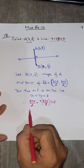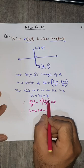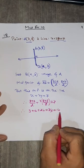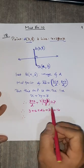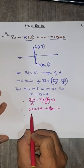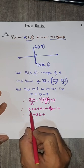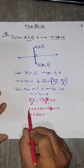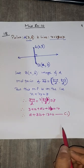So (3+A)/2 plus 3 times (8+B)/2 equals 7. Simplifying: 3 plus A plus 24 plus 3B equals 14. So A plus 3B plus 13 equals 0. We call this equation number 1. So the midpoint concept has been used.